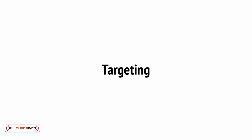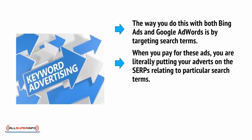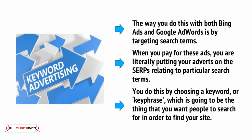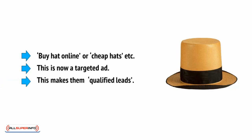The other thing that most PPC ad networks have in common is the ability to target a specific demographic. This means that you can identify who your buyer persona is and profile your ideal customer from there, then target that person specifically with your adverts. The way you do this with both Bing Ads and Google AdWords is by targeting search terms. When you pay for these ads, you're literally putting your adverts on the SERPs relating to a particular search term. You do this by choosing a keyword or key phrase — for example, if you were selling a hat, your key phrase would probably be 'buy hat online' or 'cheap hats.' This is a targeted ad because it lets you advertise specifically to people who are looking to buy the thing you have, meaning they fit within your target audience and are actually qualified leads.